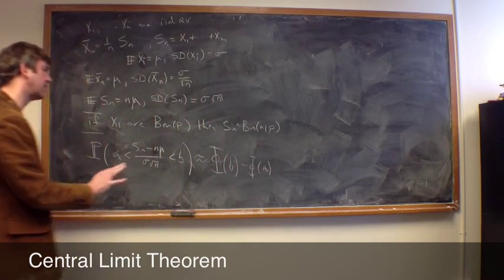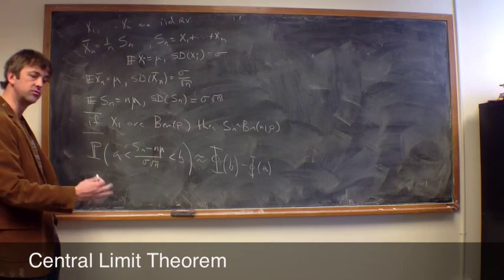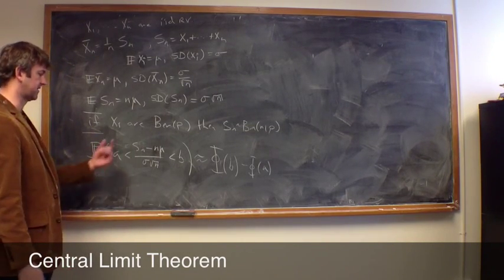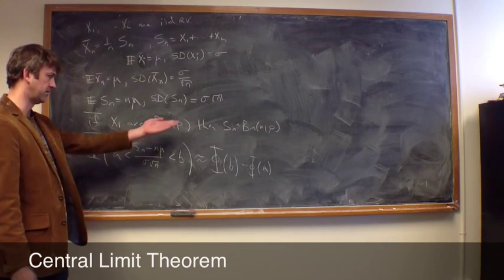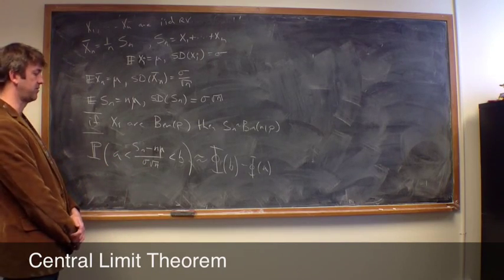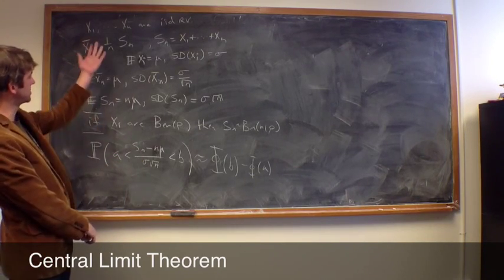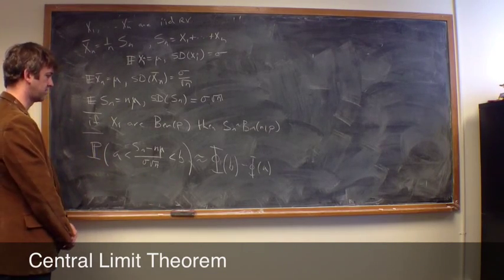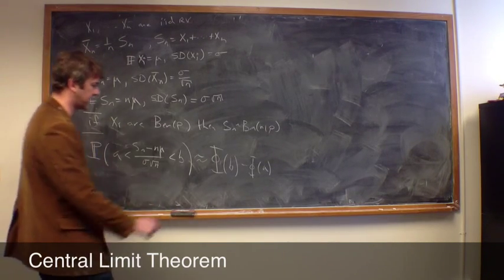Now, we don't have any continuity corrections here, because we haven't assumed anything about the fact that these are integer values, like we did for the binomial, they were integer valued, so we could make a better approximation using the continuity correction. But in this more general setting, where we just know they're independent variables, we just have this much simpler, straightforward, normal approximation without the continuity correction.